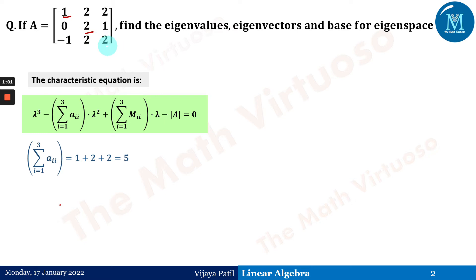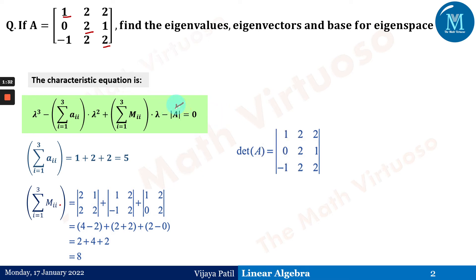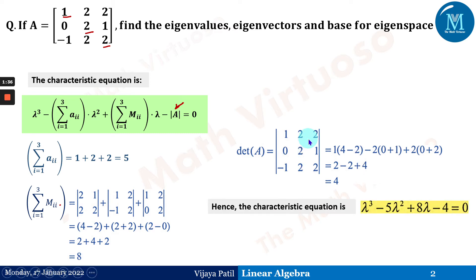The summation of a_ii is 1 plus 2 plus 2, which is 5. We find the summation of M_ii corresponding to the diagonal elements. The determinant of A is 4, giving us the characteristic equation: lambda cubed minus 5 lambda squared plus 8 lambda minus 4 equals zero. The eigenvalues — also called latent or proper values — are 1, 2, 2.